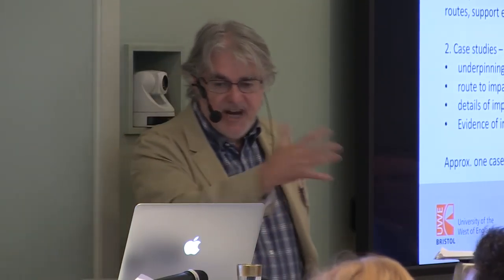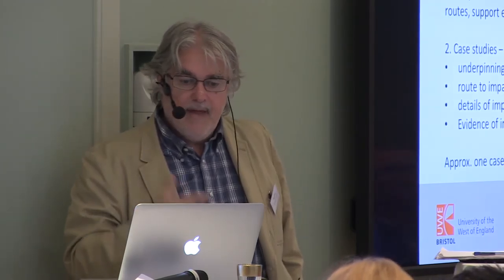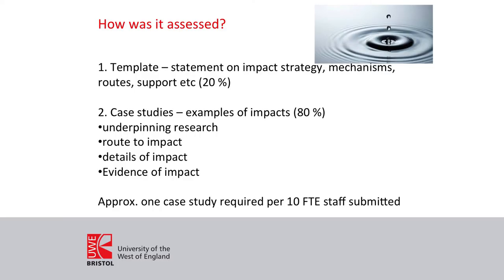You get an impact template — a general statement about the impact strategy — and then the case studies themselves, which counted 80% of that part of the submission. Each case study, only four pages long but taking a lot of work to create, consists of a description of the research that underpinned the impact, the route to impact, the means by which that research was fed into some sort of change process, details of the impact itself, and then the evidence of impact. Approximately one case study per ten staff was required, depending on the size of the submission.